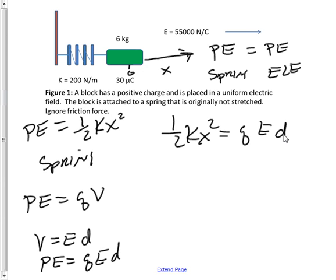Now displacement in the electric field will be equal to the displacement of the spring. Therefore, x is going to equal d. Substituting x where we see d, the equation is one-half kx squared equals qEx.